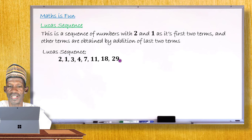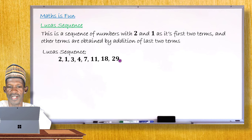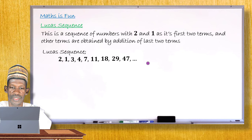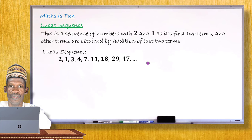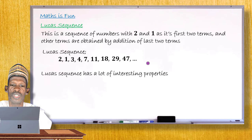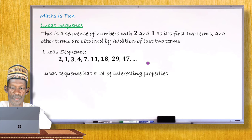Adding 18 and 29 gives 47, and so on. This is the Lucas sequence and how we generate its terms. This sequence has many amazing properties which you shall see in subsequent lessons. Thank you for your attention and we meet in our next lesson.